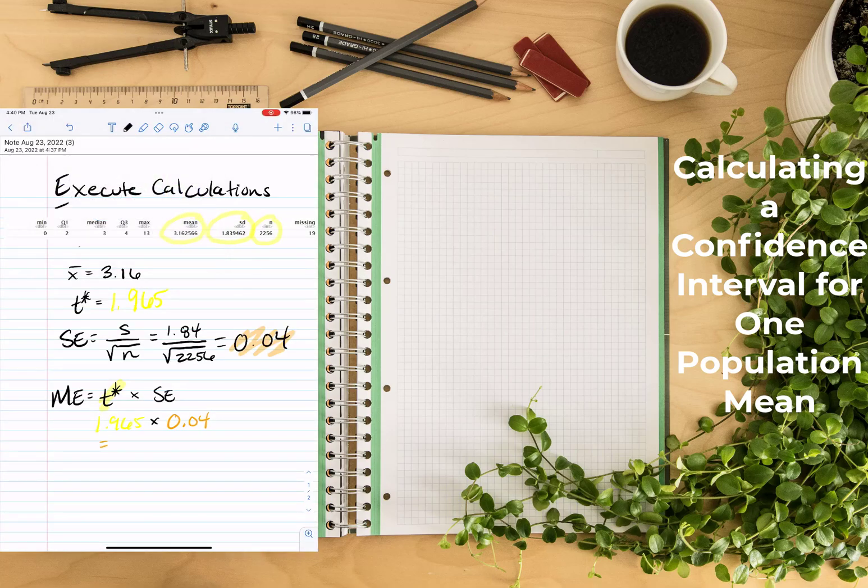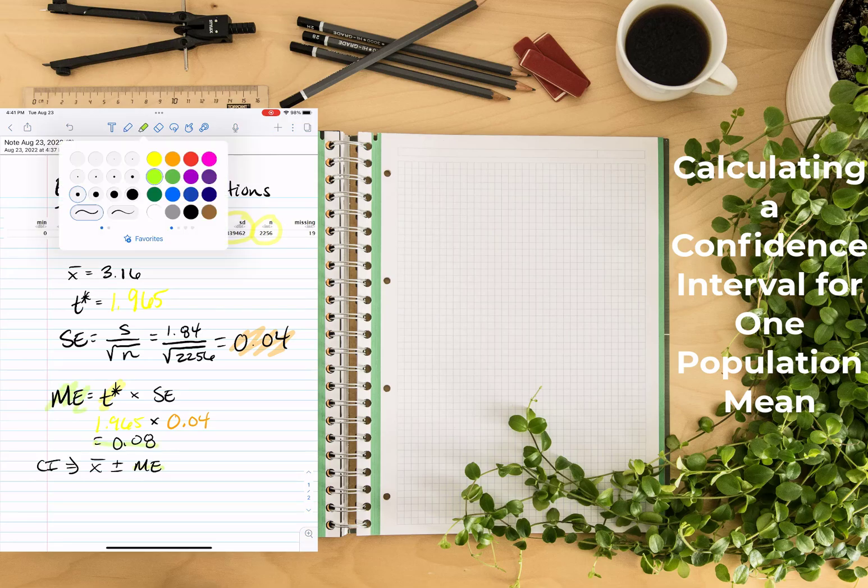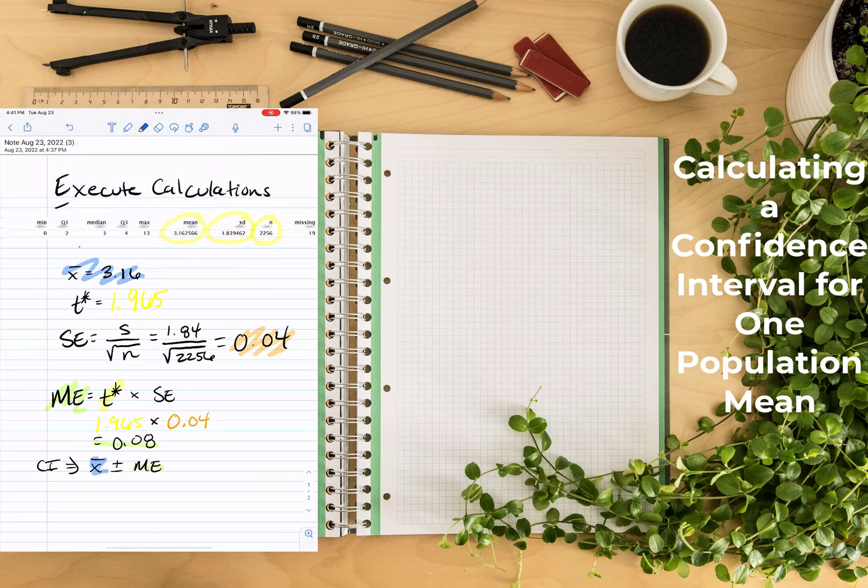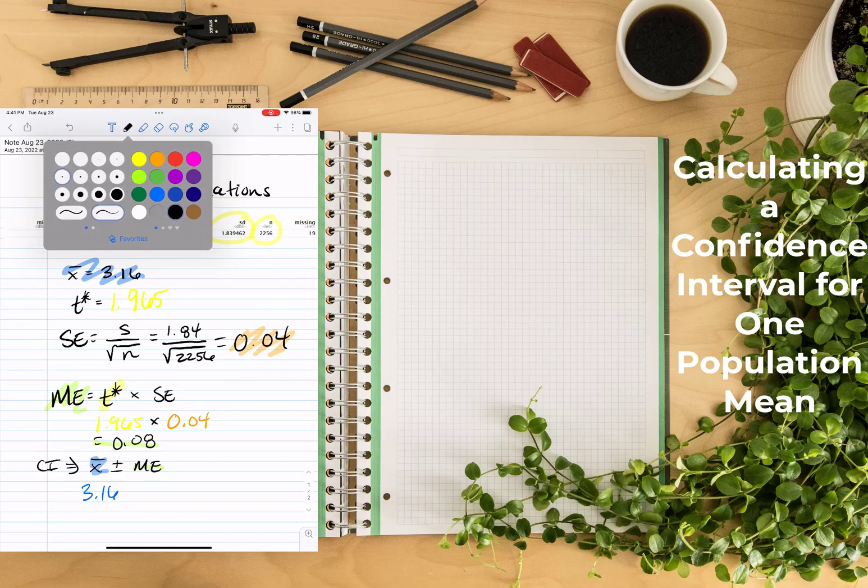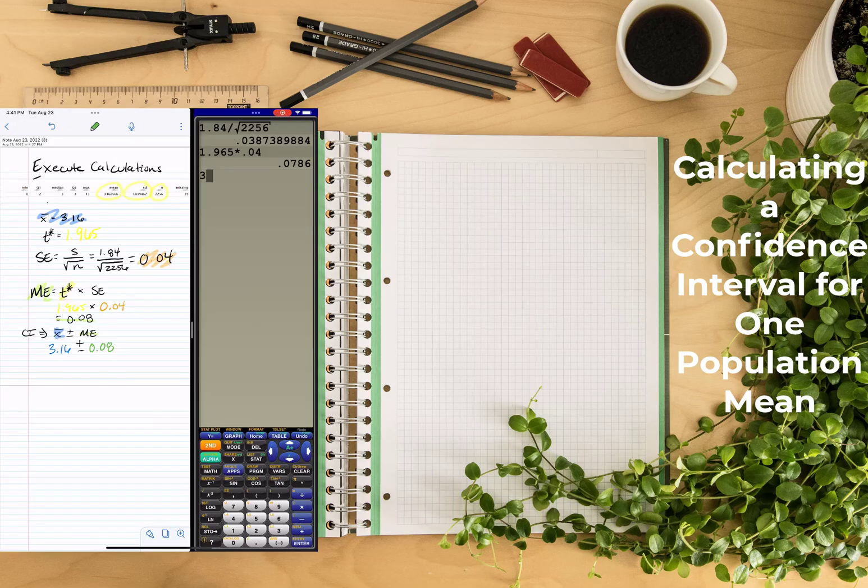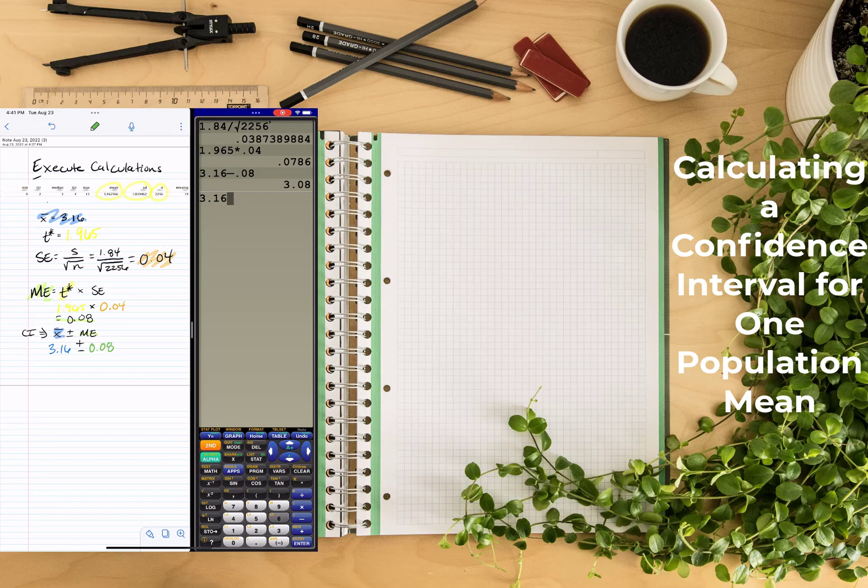Now that we have the margin of error, we can use that to add and subtract to our mean, which was 3.16. And that will give us both our lower and upper bound. So we have 3.16 and we'll be subtracting the 0.08, and then we have 3.16 and we'll be adding the 0.08. And that will give us 3.08 and then an upper bound of 3.24.